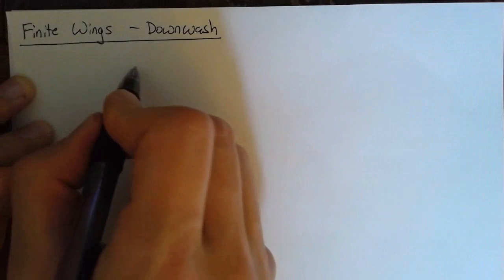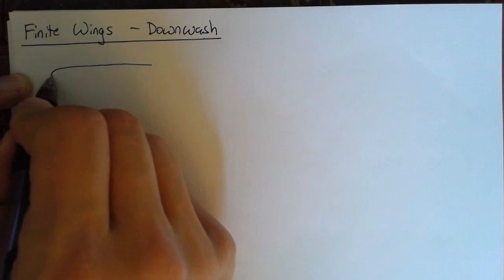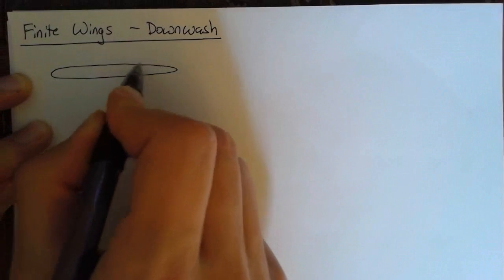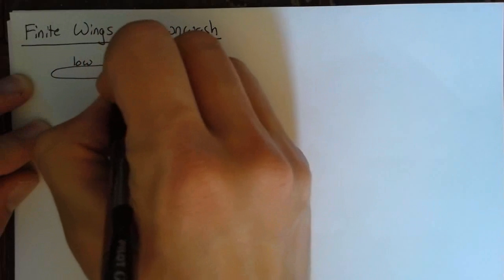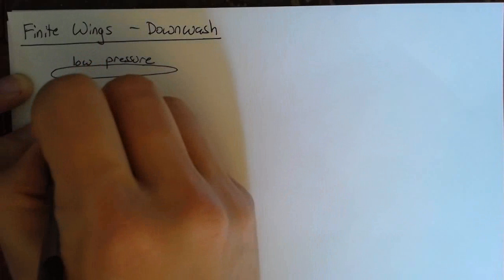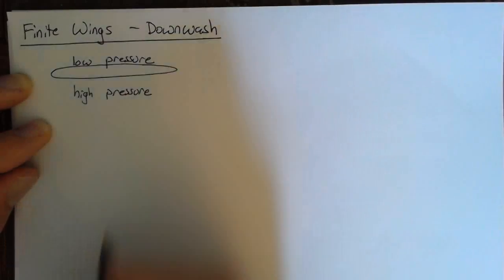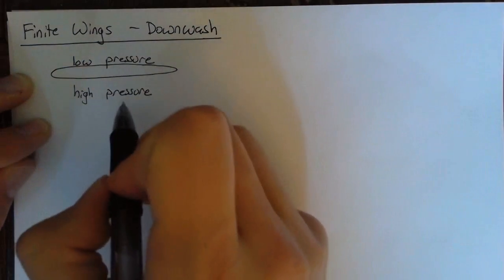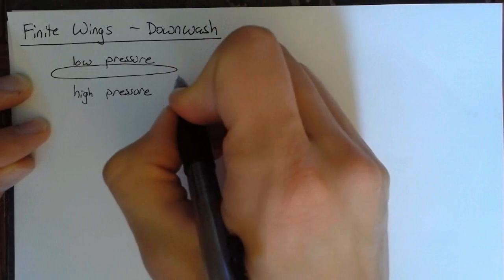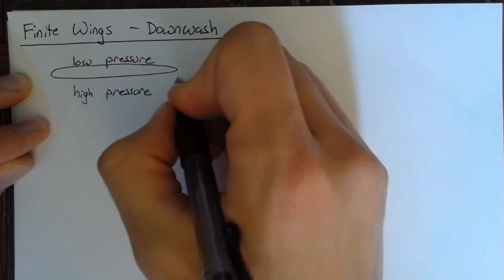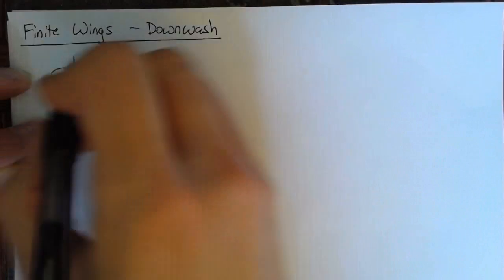So in general, we're interested in some wing that creates some lift. And what this means is that we're going to have some pressure differential. So this means that we have low pressure on top, and we have high pressure. And because of this pressure differential, nature is going to try and balance it. And it does that around the wingtips by causing some flow around these wingtips.